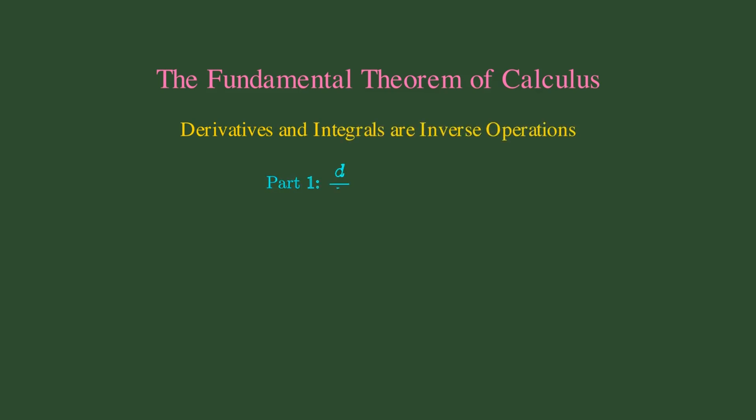Part 1 tells us that if we integrate a function and then differentiate the result, we get back our original function. In symbols, the derivative with respect to x of the integral from A to x of f(t)dt equals f(x).